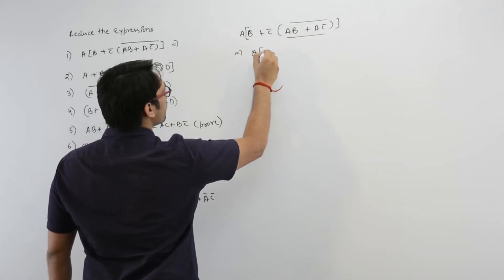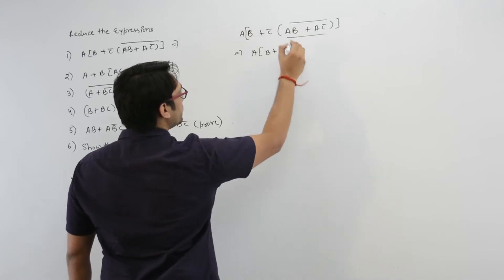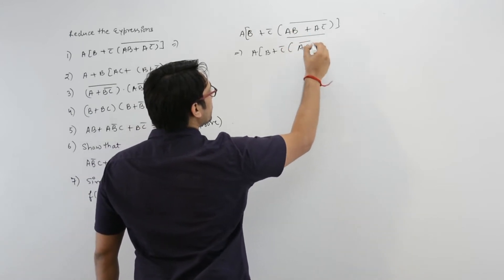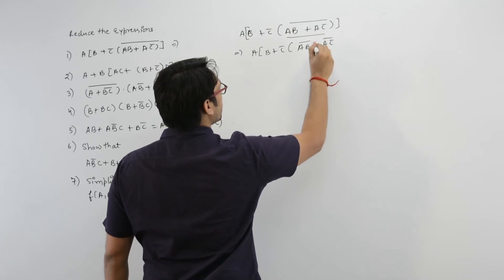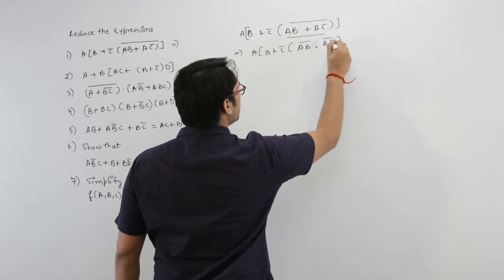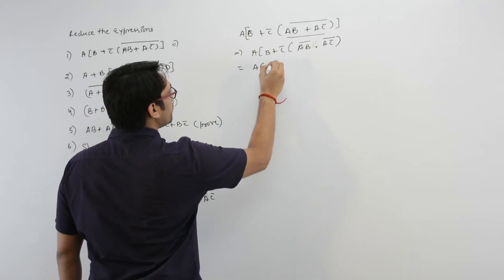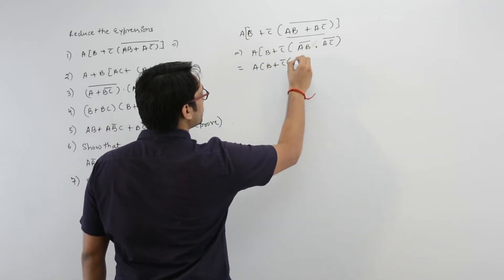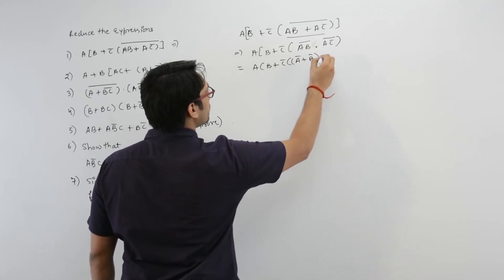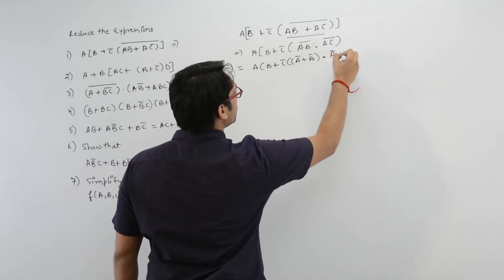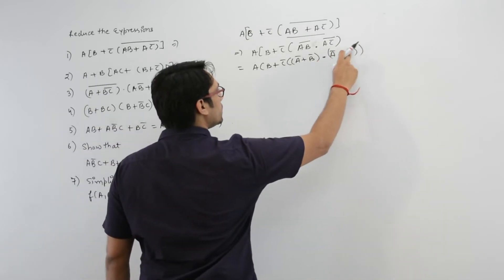So it is ab plus c complement, which can be written as ab complement plus ac complement, dot ac complement. It can be written as ab plus c complement, further a complement plus b complement, dot a complement plus c complement complement.